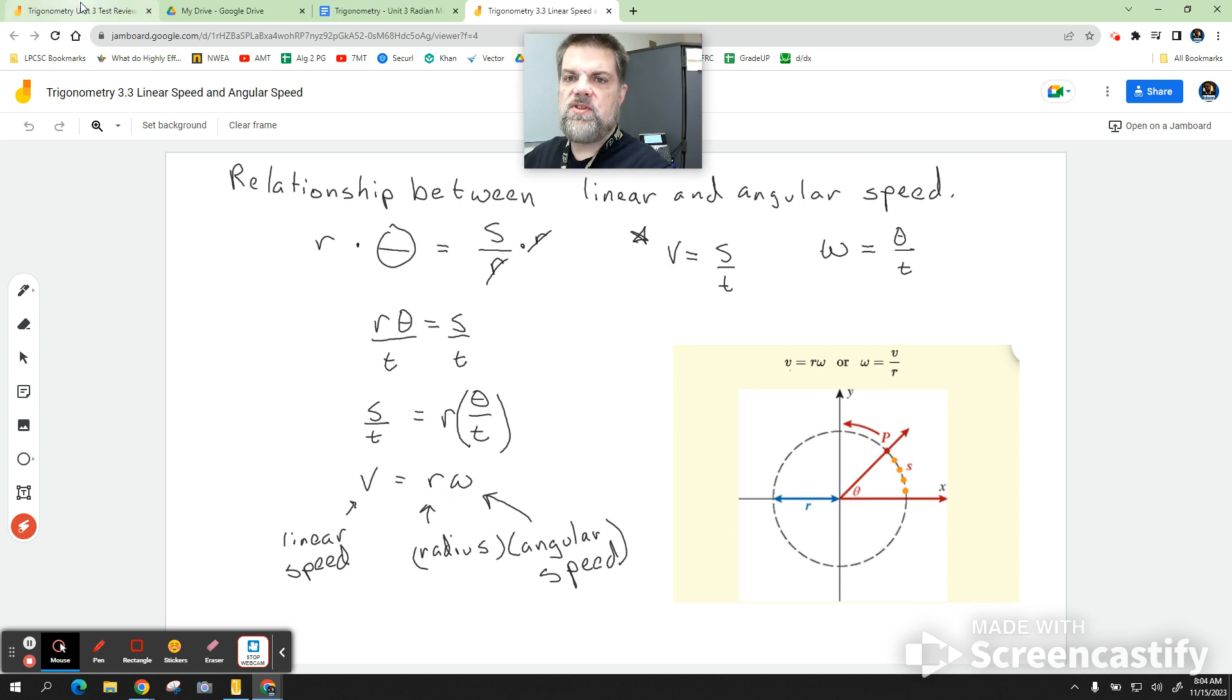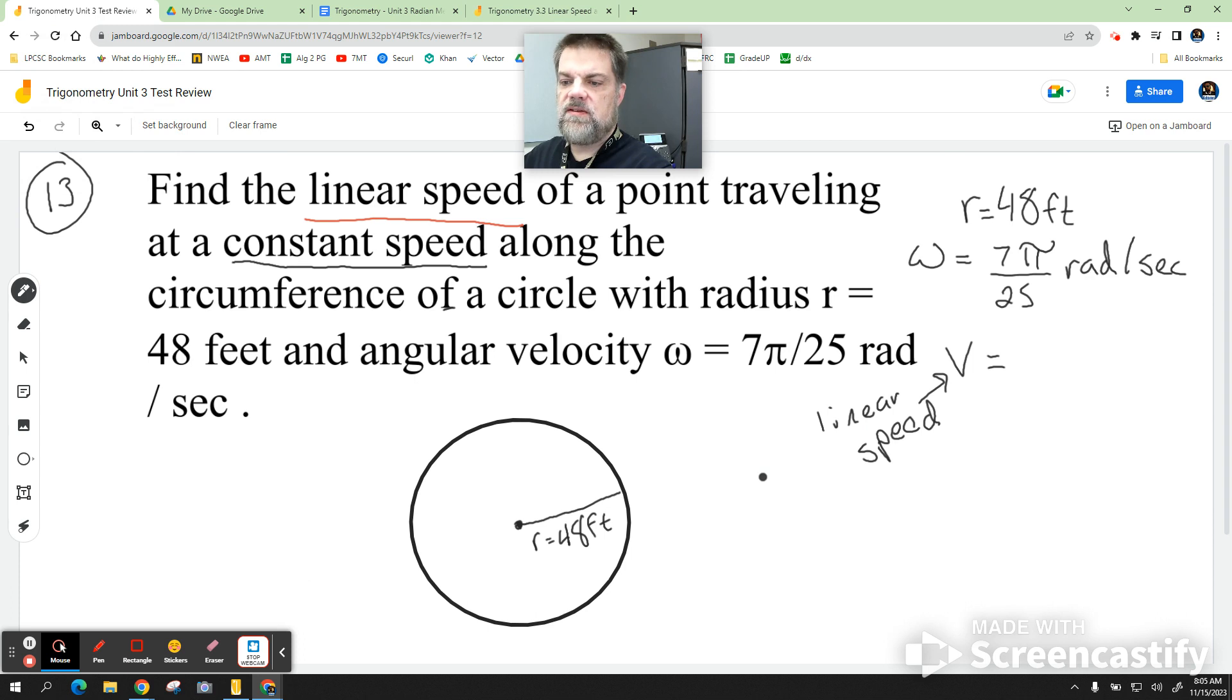Okay? So, that's what you're supposed to do. Just thumb through your notes until you see it. And so, to find V, my linear speed, I just need to take the radius and multiply it by the angular speed.